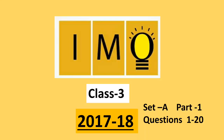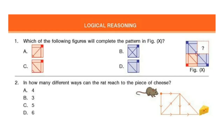Welcome to our channel Olympiad Trainer. In this video we are going to see the question paper of IMO, that is International Mathematics Olympiad exam, for class 3, year 2017-18, Set A. This question paper is divided into two parts. In part 1 we are going to see two sections: logical reasoning and mathematical reasoning. For part 2, click on the link given in the description box. So let's start with the first section: logical reasoning.